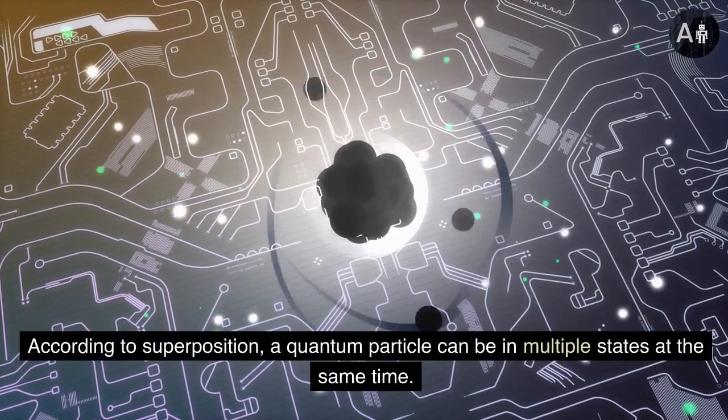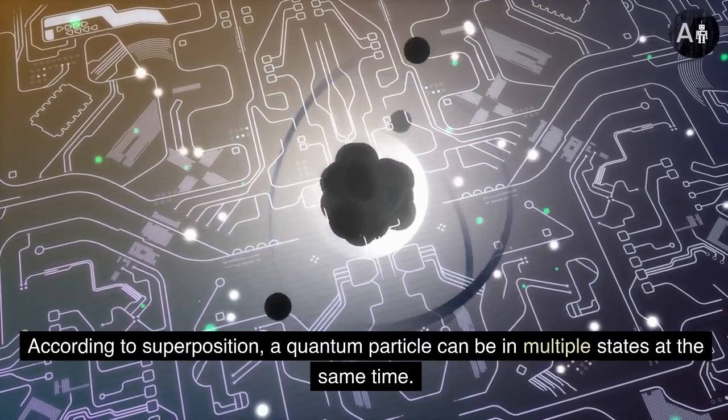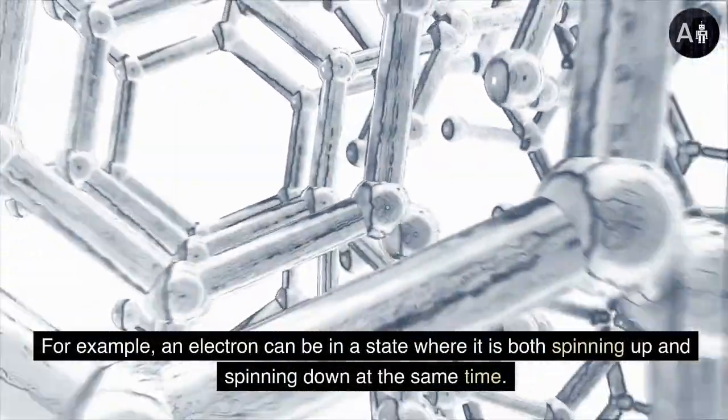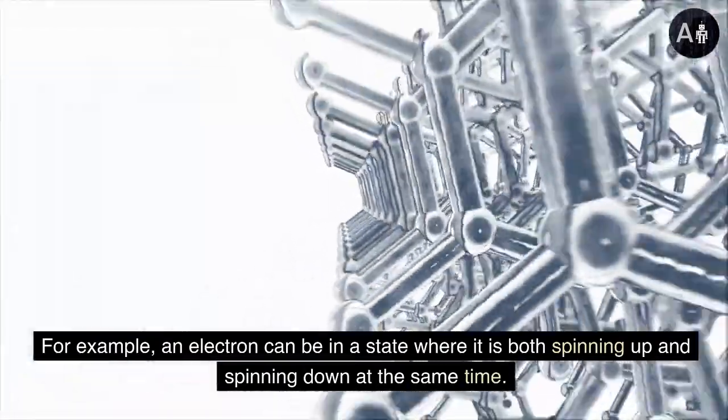According to superposition, a quantum particle can be in multiple states at the same time. For example, an electron can be in a state where it is both spinning up and spinning down at the same time.